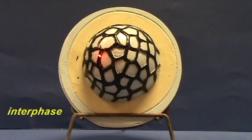This represents a cell in interphase. The nucleus is intact and contains chromatin. This network of dark material is meant to represent chromatin.